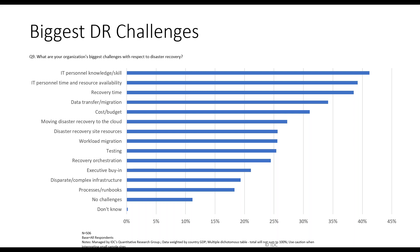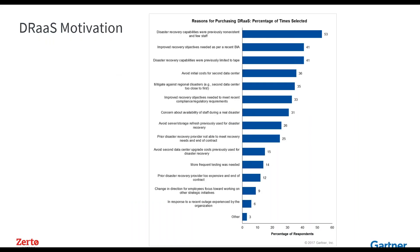Skill and knowledge erodes through the business over time. Resource availability — making sure we have enough skilled people to carry out DR tests and live failovers when we need them — is another concern. Recovery time, how long it takes to get back up and running, is a big concern for people, as is cost and budget. And I think the biggest one relevant to this webinar's audience is moving DR to the cloud — that is a big challenge people want to overcome.